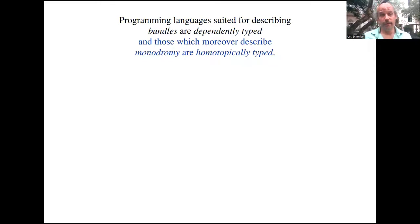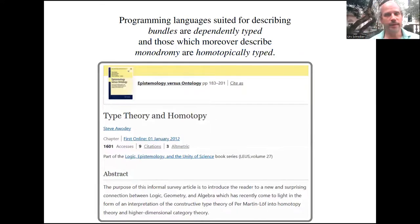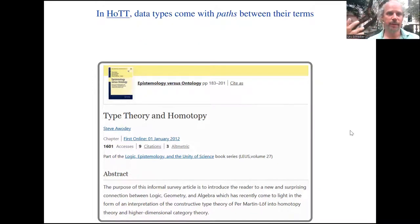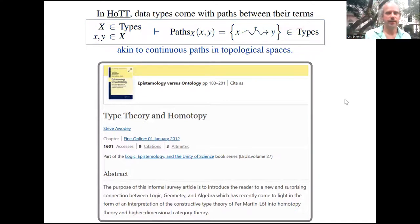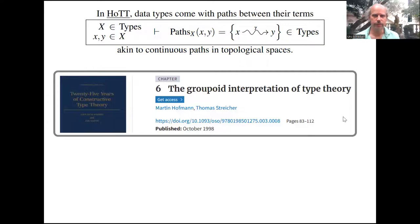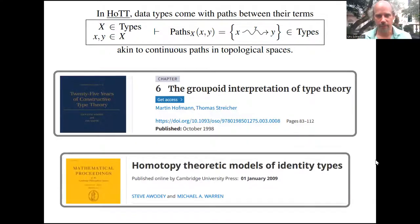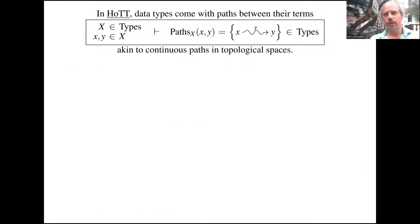If we want to realize monodromy in bundles, there's a programming paradigm that reflects this, now known as homotopy type theory. This goes back to ideas now 12 plus years old. One originator is Steve Awodey. In such homotopy type theoretic programming languages, data types come with a notion of paths between their terms. If we have any type x, then given a pair of terms in the type, there's a new type depending on these terms, the type of paths, which behaves just like the space of continuous paths in a topological space between x and y.